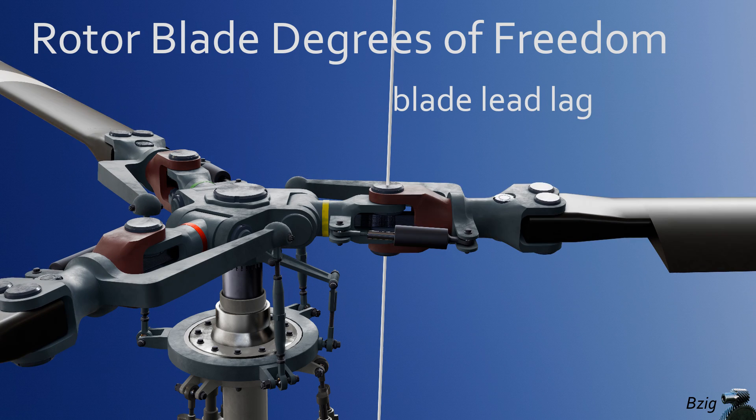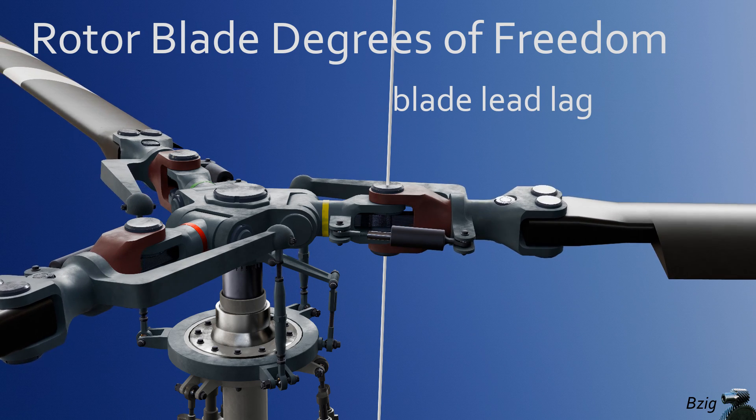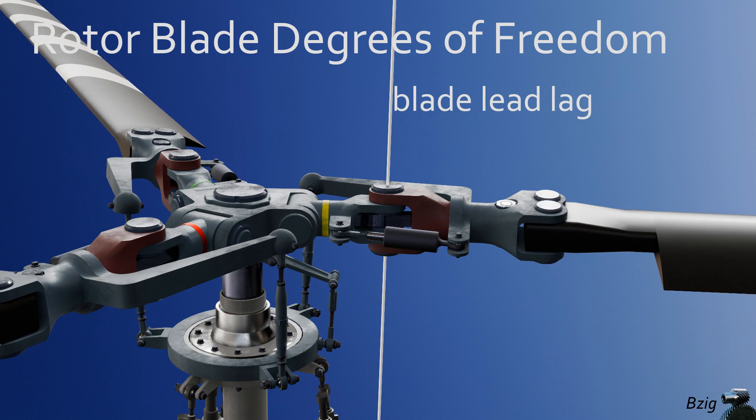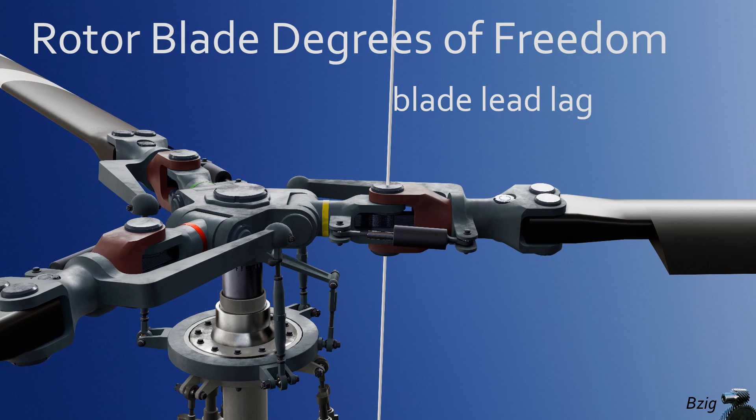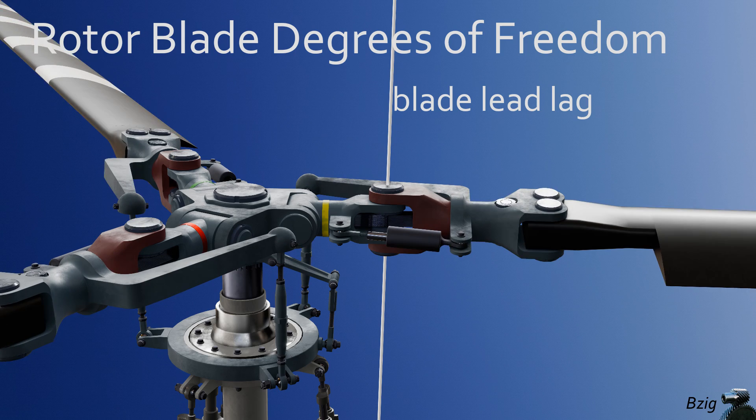Blade lead lag is rotation about the blade's vertical axis, and the component that's highlighted in red here is called the lead lag hinge of the rotor head.